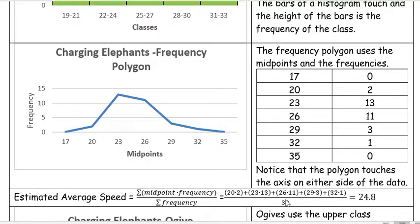We're going to add all that up. The cumulative frequency is if we add up all the pieces of data, there were 30 elephants, so you divide by 30 and that gives you the estimated average speed.